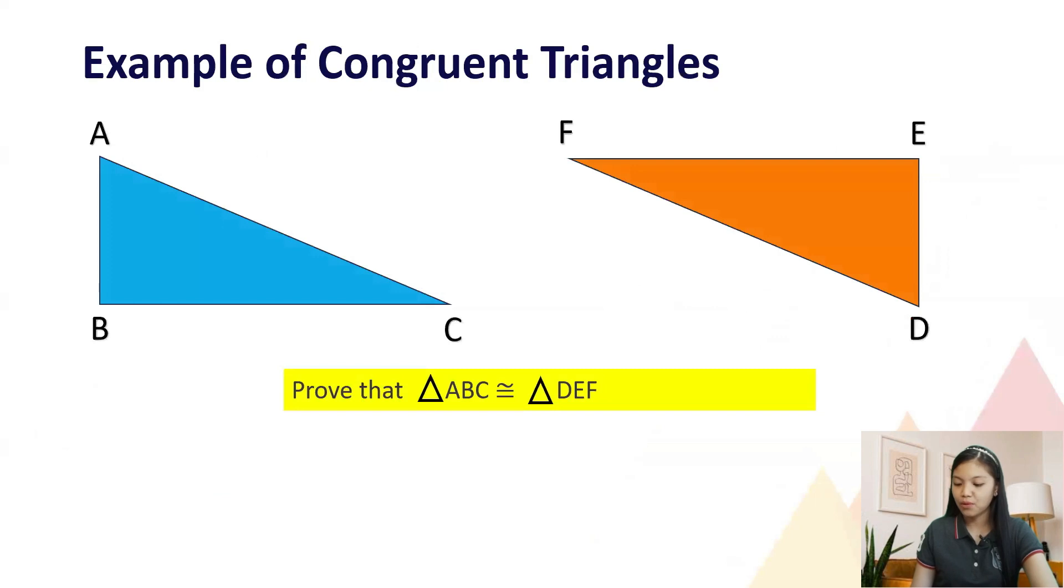Here is an example of congruent triangles. Two triangles are congruent if and only if all of their corresponding parts are congruent by the rule of corresponding parts of congruent triangles, or CPCT.